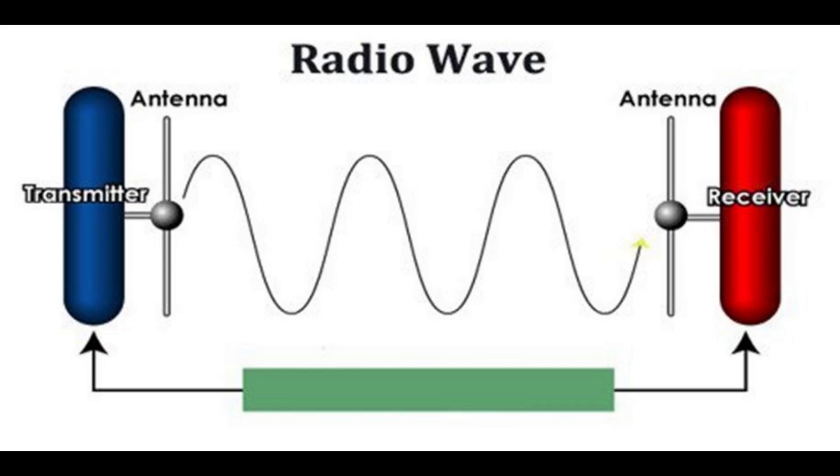The radio waves from many transmitters pass through the air simultaneously without interfering with each other. They can be separated in the receiver because each transmitter's radio waves oscillate at a different rate, in other words each transmitter has a different frequency, measured in kilohertz, megahertz, or gigahertz.